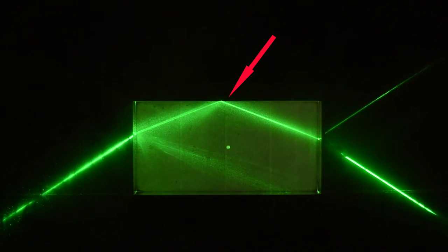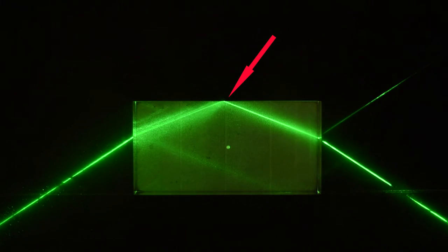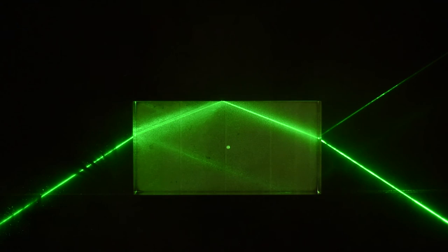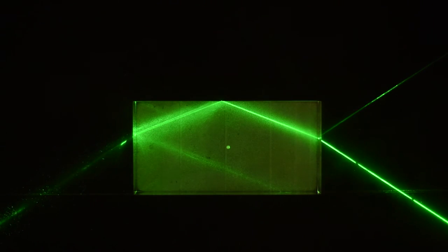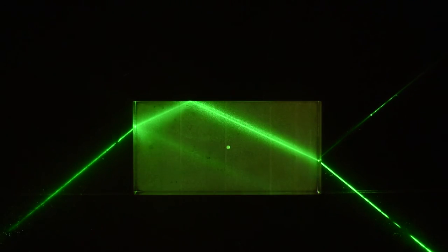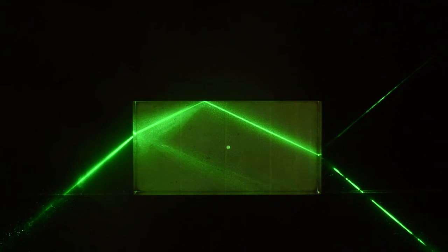So if you see on the top surface, there is no transmitted beam, and the beam is entirely reflected back into the material. And this process is known as total internal reflection.